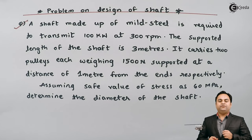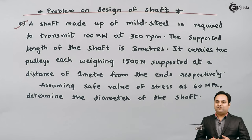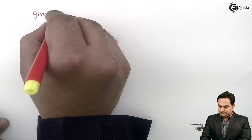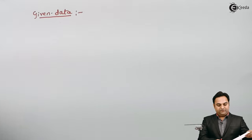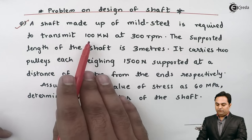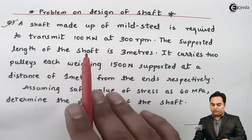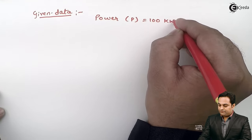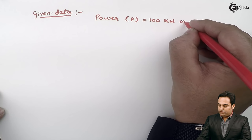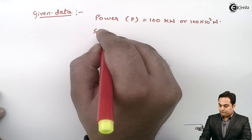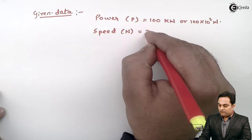This is the question on the design of a shaft. I will write the given data first. The shaft is made up of mild steel. It is required to transmit 100 kilowatts — that is 100 × 10³ watts — at a speed of 300 rpm.